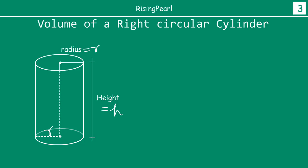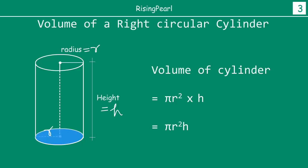So the volume of any right circular cylinder is simply calculated by finding the area of either the top circle or the bottom circle — highlighted in blue here — and multiplying that by the height. In other words, the area of the top or bottom circle is πr², and you simply multiply that by the third dimension, which is the height. So the formula is πr²h. This is the formula for calculating the volume of any right circular cylinder.